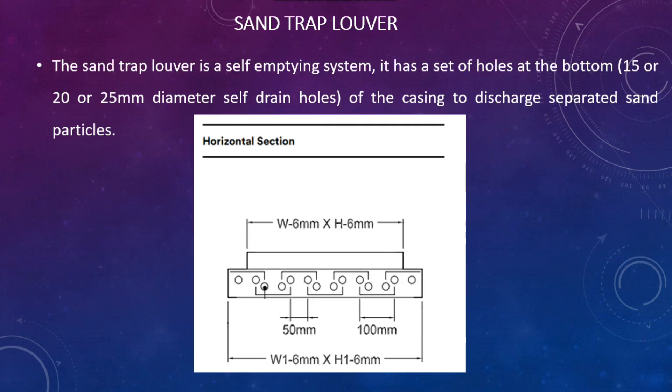The sand trap louver is a self-emptying system. It has sets of holes at the bottom of the casing — 15mm, 20mm, or 25mm diameter self-draining holes — to discharge separated sand particles.